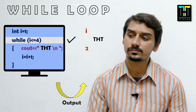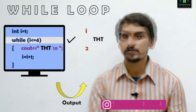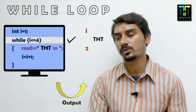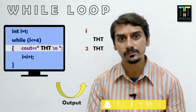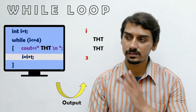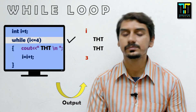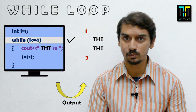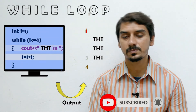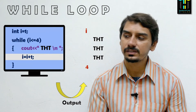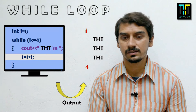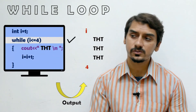After the second iteration, i is incremented to 3. We check the condition: 3 <= 4 is true, so we display 'tst' a third time. Then i becomes 4. We check again: 4 <= 4 is true, so we display 'tst' a fourth time, then i is incremented to 5.